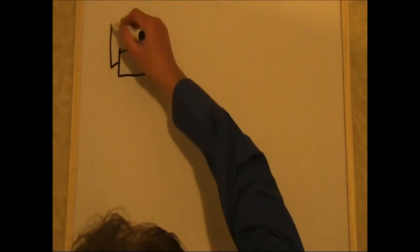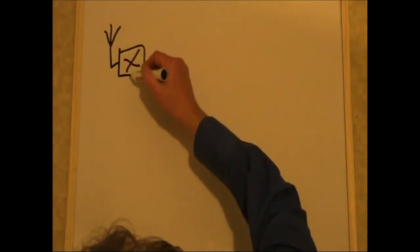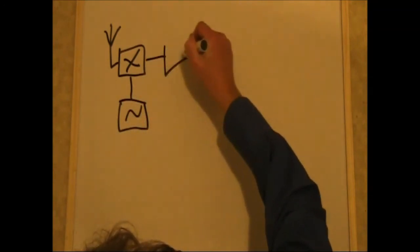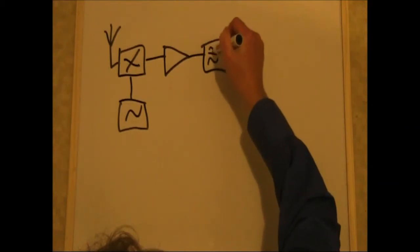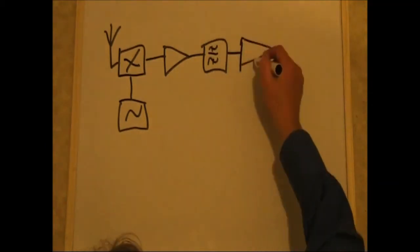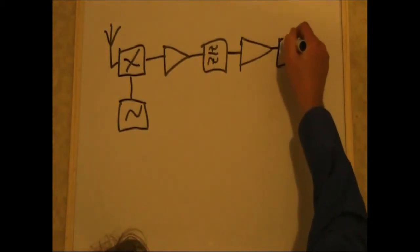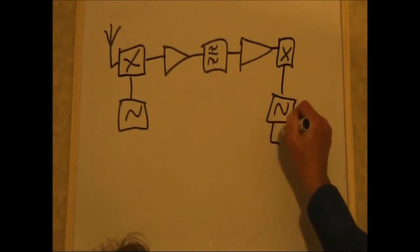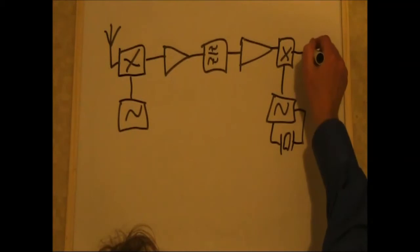Let's first of all draw a block diagram of a superheterodyne receiver. Here's the mixer, your local oscillator, there might be an IF amplifier, a filter, another amplifier, a product detector, another oscillator, probably a BFO, and an audio amplifier.